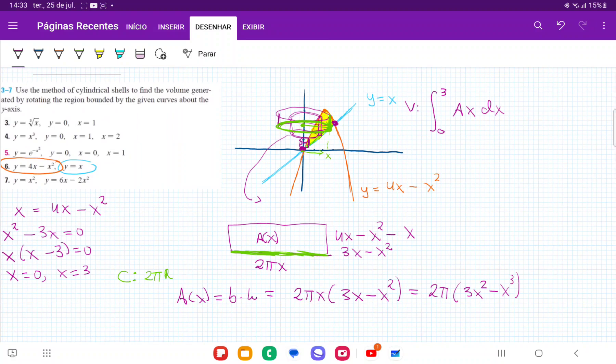So now that we have an expression for the area, we are ready to integrate, because our volume is just the integral of our A(x). And we have that expression already. So we're going to say here that this integral is equal to, I'm going to put the 2 pi outside because it's a constant, 2 pi from 0 to 3 of A(x), which is 3x squared minus x cubed, and all this times dx.